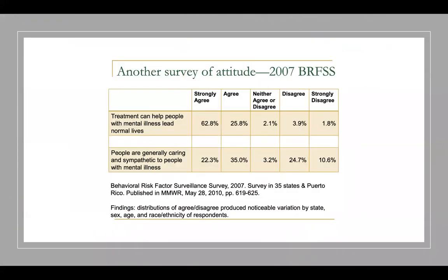This table outlines findings from a 2007 survey of attitudes. It's interesting because it shows that people generally believe that treatment can help individuals with mental illness lead normal lives. However, they're not so confident in the belief that people are generally caring and sympathetic toward people with mental illness.